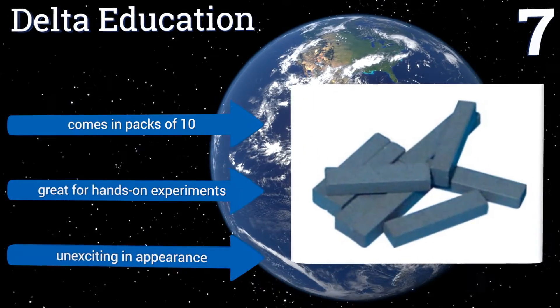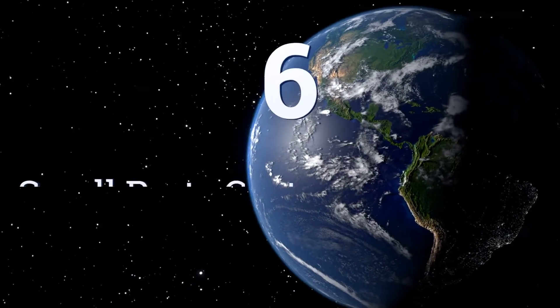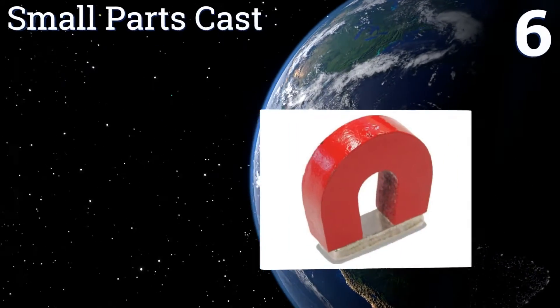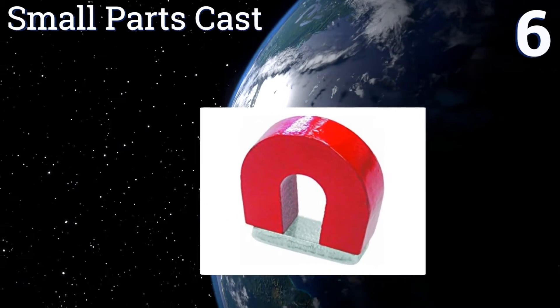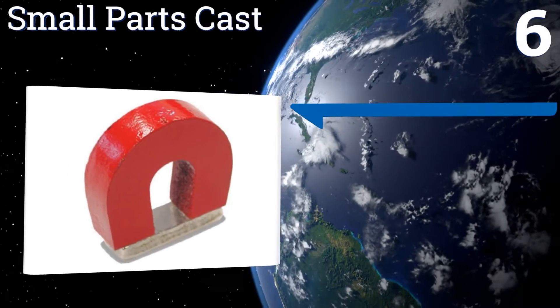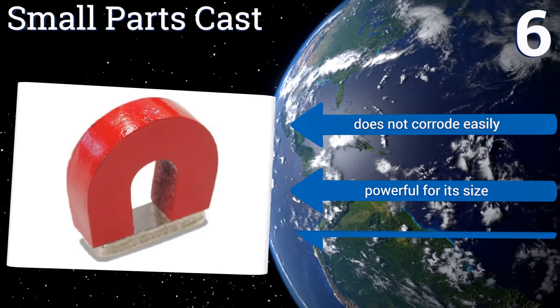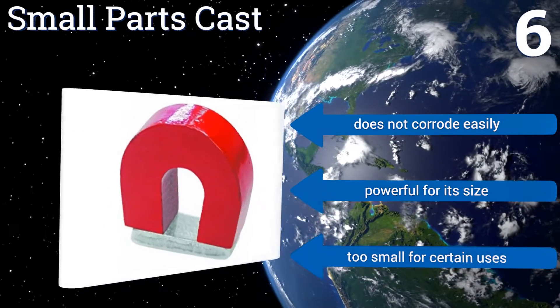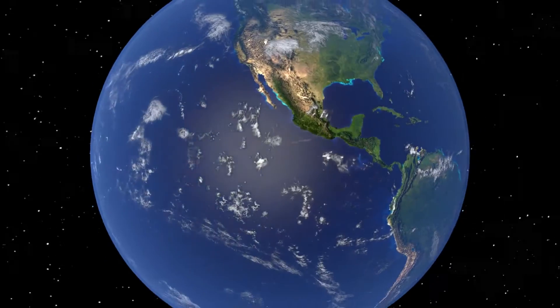Coming in at number 6 on our list, the classic horseshoe design has been a favorite of kids and teachers for decades. The Small Parts Cast follows in the tradition, offering high heat resistance and a maximum 2 pounds of pull force to go with its vibrant red coating. It doesn't corrode easily and is powerful for its size. However, it is too small for certain uses.